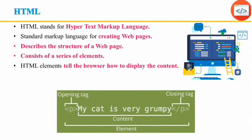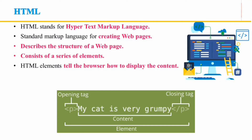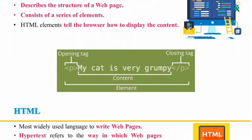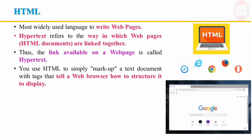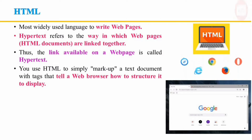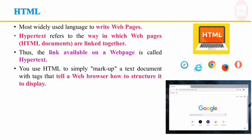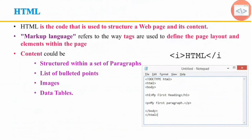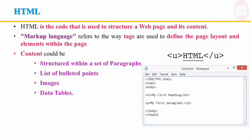HTML stands for Hypertext Markup Language. It is a standard markup language for creating web pages. It describes the structure of the web page and consists of a series of elements that tell the browser how to display the content. The purpose of a web browser is to read HTML documents and display them correctly. The browser does not display the HTML tags but uses them to determine how to display the document. An HTML file is made up of elements that are responsible for creating web pages and defining content.